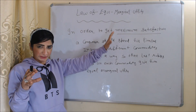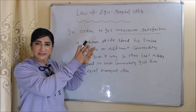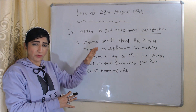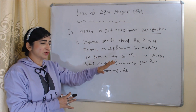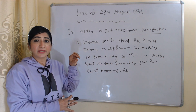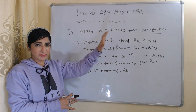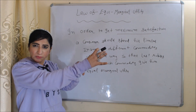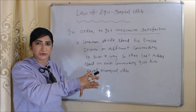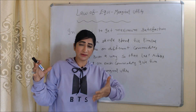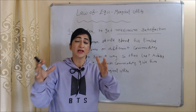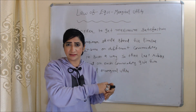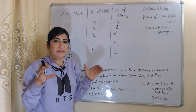Now we are going to talk about the law of equi-marginal utility. According to this law, in order to get maximum satisfaction, a consumer should spend his limited income on different commodities in such a way so that the last rupee spent on each commodity gives him equal marginal utility. In short, each good should give him equal marginal utility. We will clearly understand this with the help of a table and example.